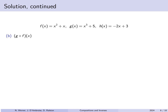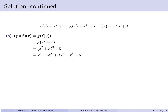For g(f(x)), we take f(x) and plug it into g. f(x) was x squared plus x, so we compute g(x squared plus x). g says take your input, cube it, and add 5. So g of a thing is thing cubed plus 5. Expanding (x squared plus x) cubed gives x to the sixth plus 3x to the fifth plus 3x to the fourth plus x cubed, plus 5.